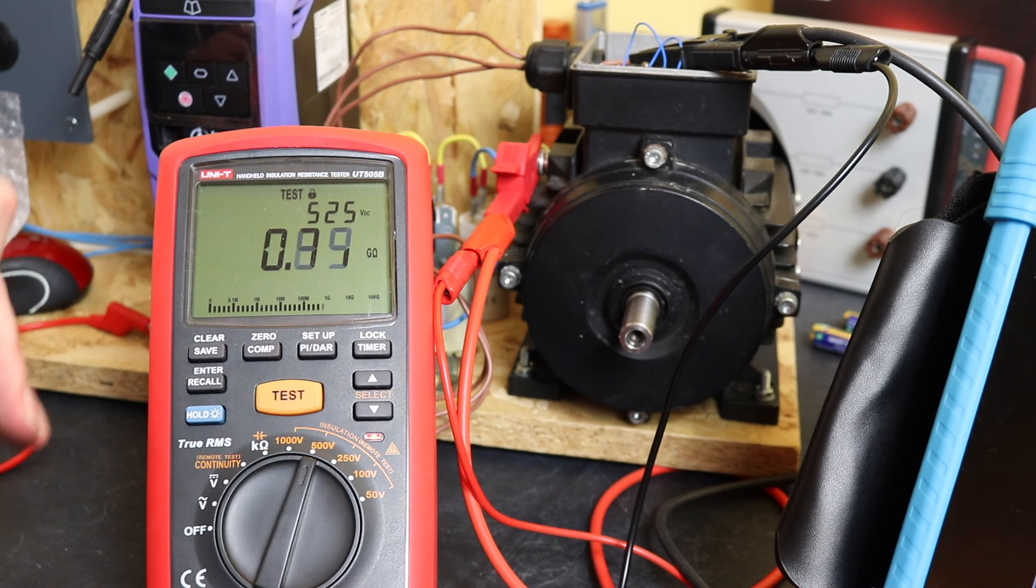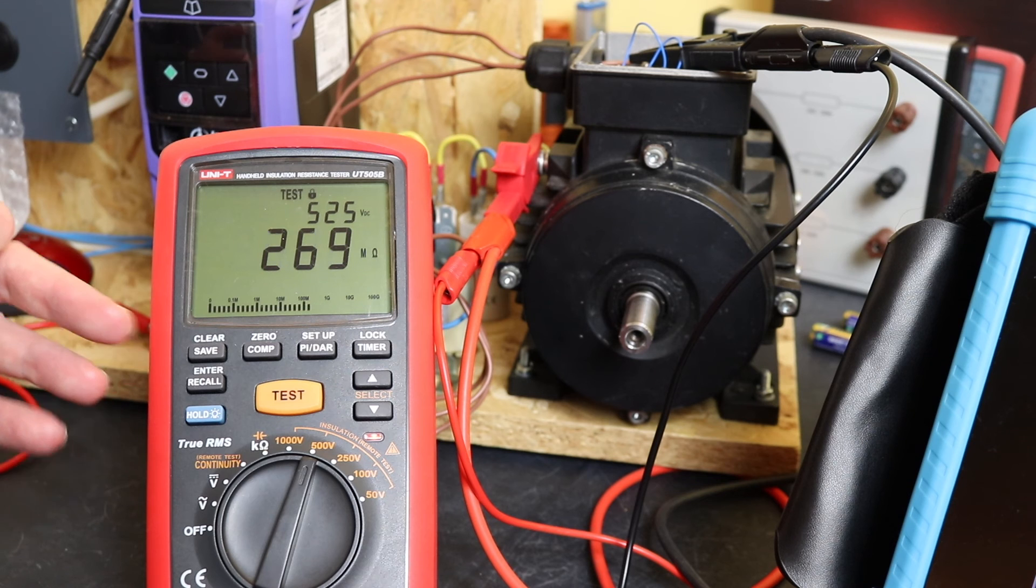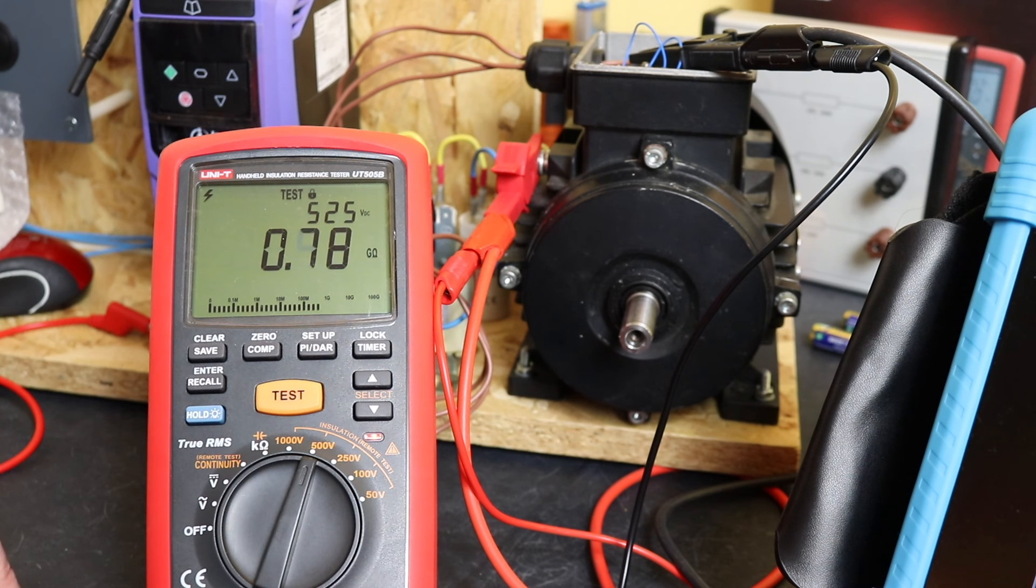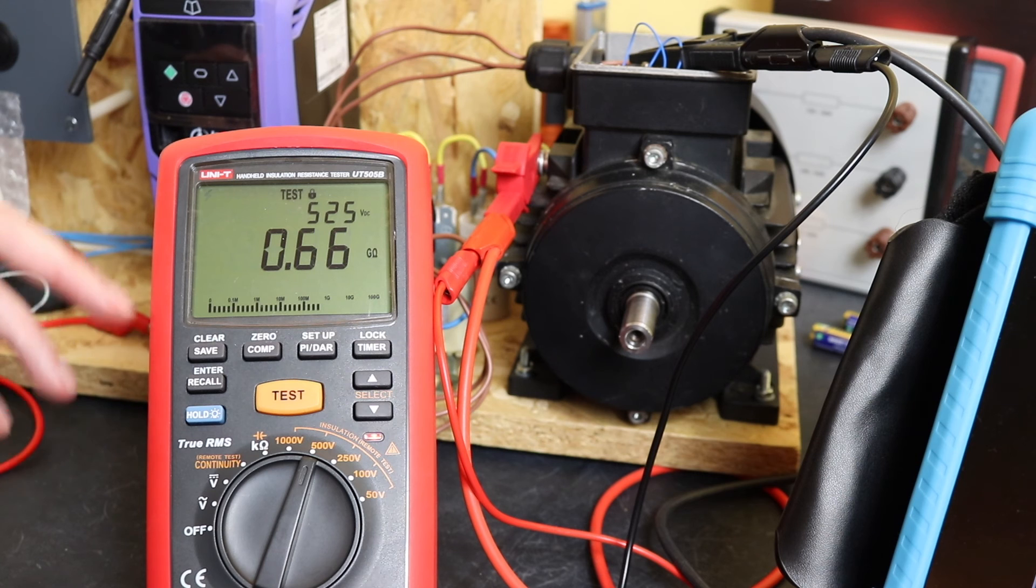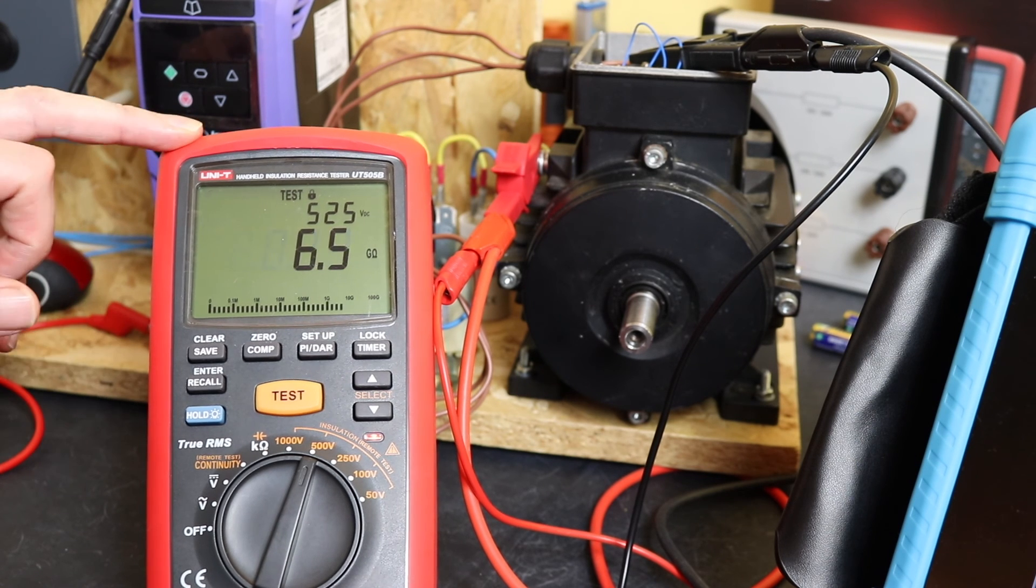Obviously the reading has changed, but we start to see an awful lot more oscillation in the output of this. You can see it bouncing around, whereas it was relatively steady, much higher than it was for other meters, but at least it was fairly steady. Now it's just bouncing around all over the place, so there does appear to be some sort of filtration issue with the output of this insulation tester.